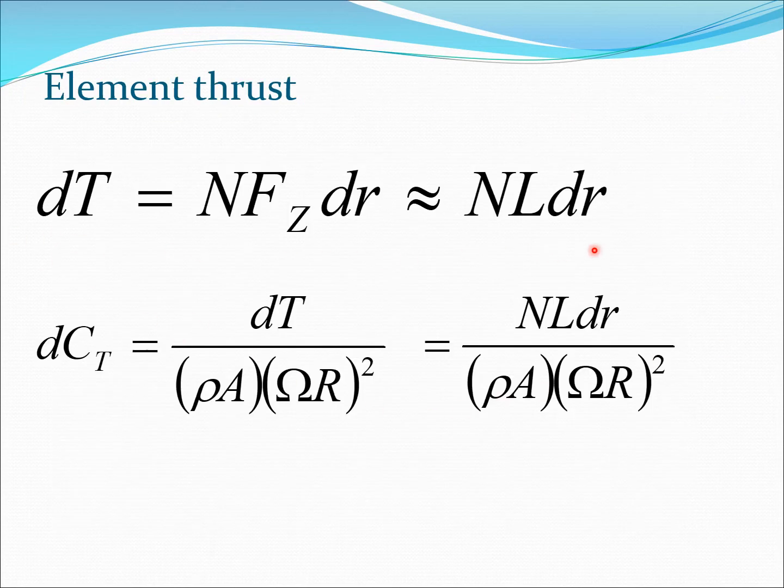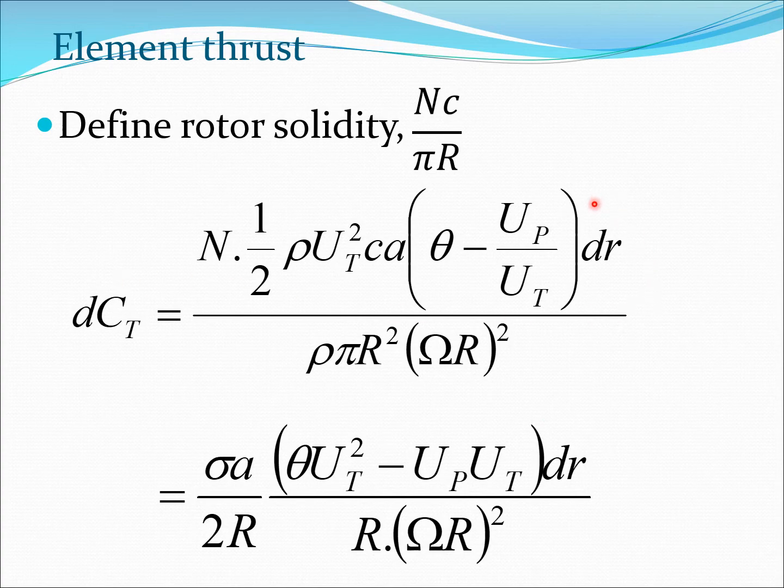Now let's get the expression for dT. Because phi is small, Fz largely comes from L. I can immediately get the expression for dCT, which is the non-dimensional thrust coefficient, as dT divided by this expression which is also in the unit of force. I expand this expression by putting in the lift expression completely. We use the fact that rotor solidity sigma is defined as Nc by pi R. So I can get Nc by pi R here, take it out and get sigma, and then the remaining things simplify to some extent.